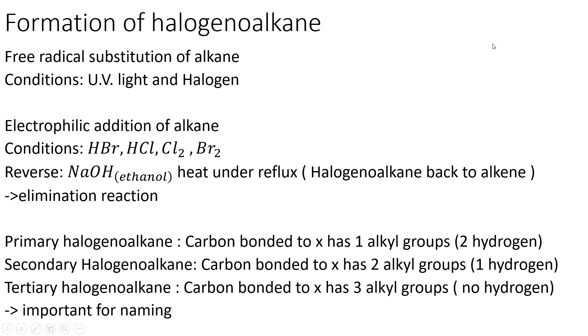Formation of halogenoalkane. The first way you can form it is through free radical substitution of an alkane. The conditions are UV light and halogen.